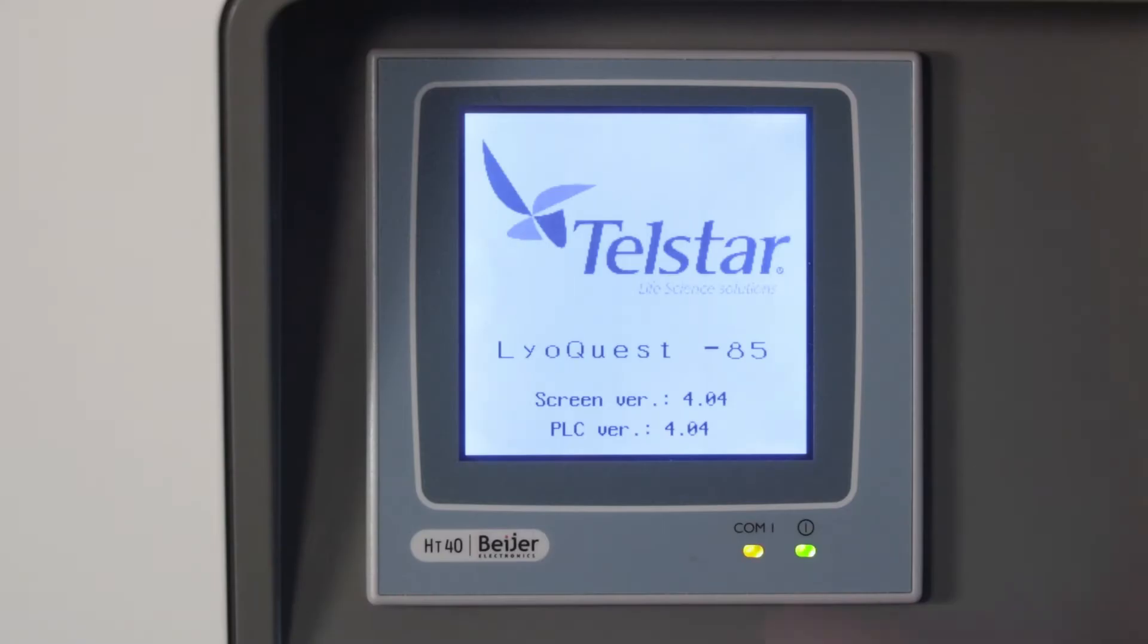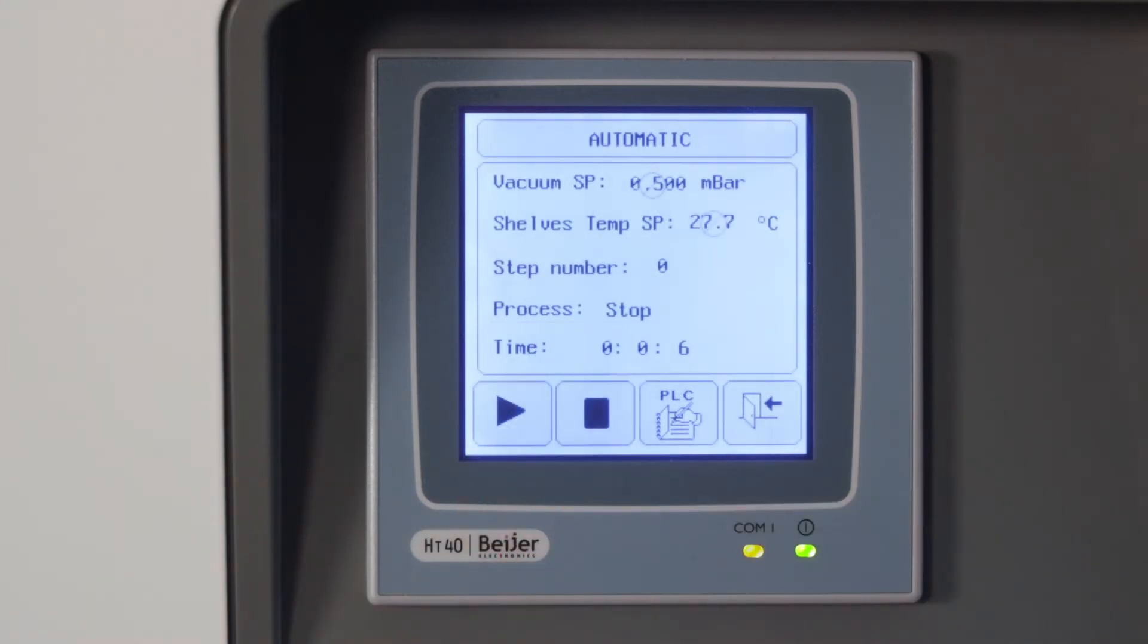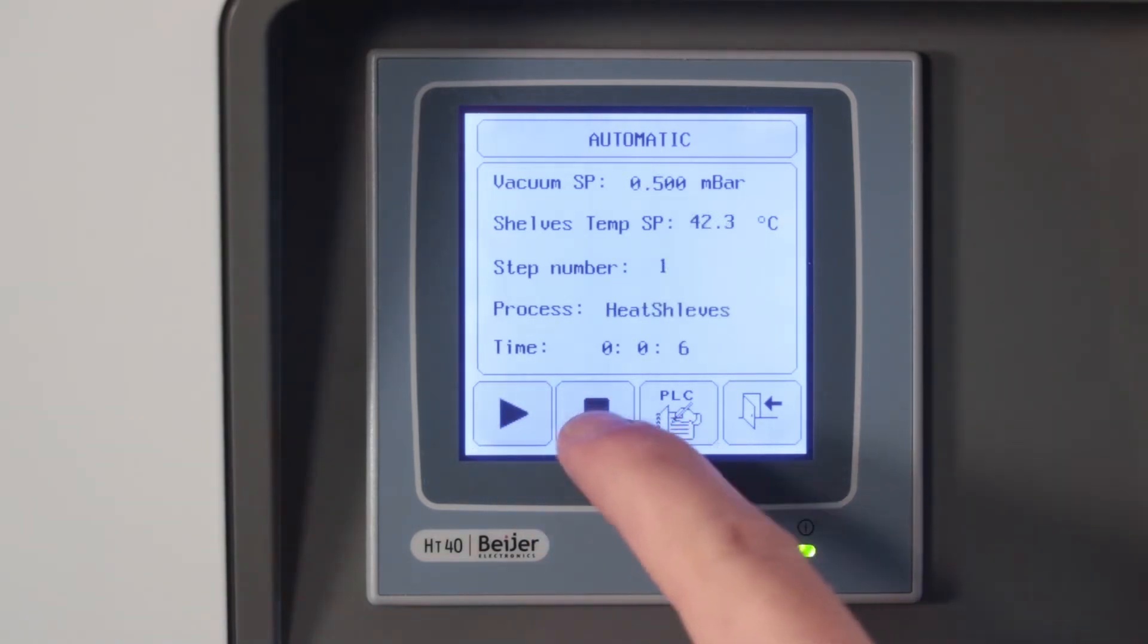This is the introduction screen. Press to access the main screen. The main screen includes four buttons from left to right. In this mode, you can start the automatic mode and stop manually.